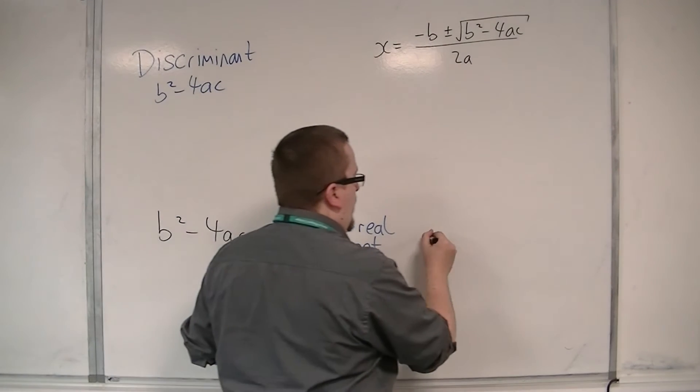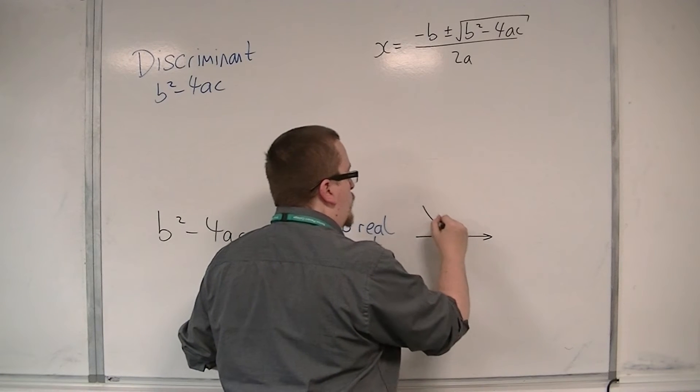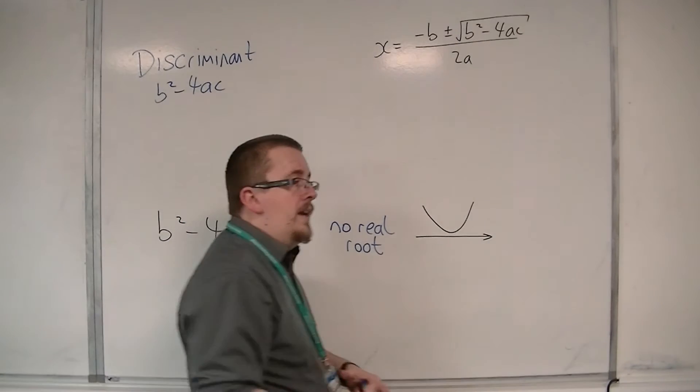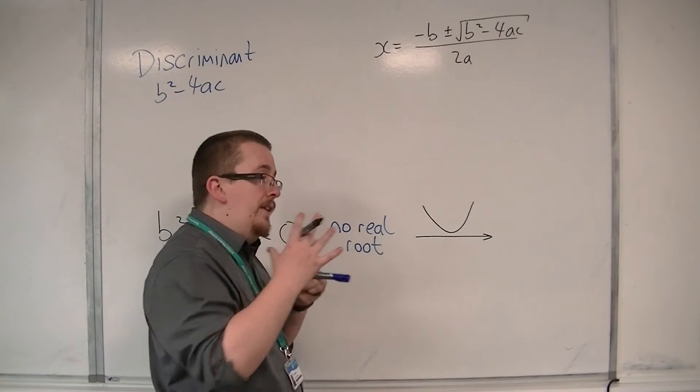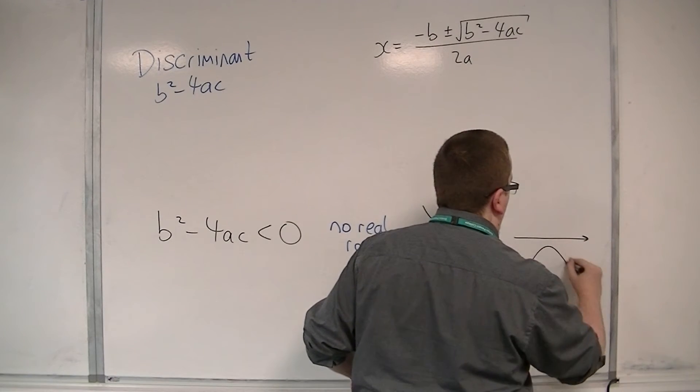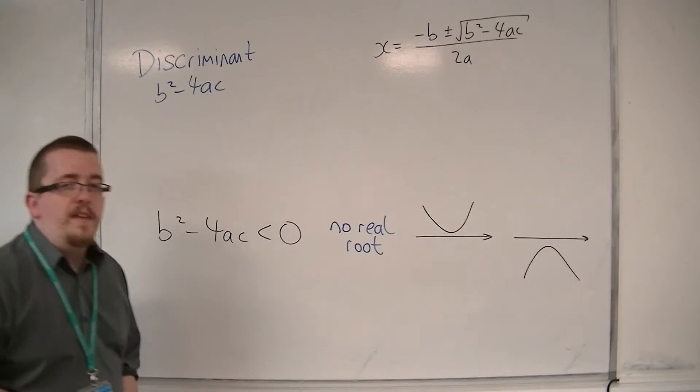So in this case, you will find that the quadratic is always above the x-axis, or if the number in front of the x² is less than 0, is negative, then the curve would be permanently below the x-axis.